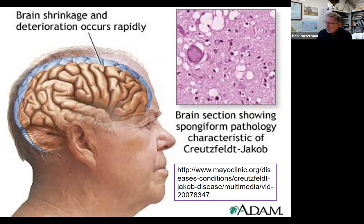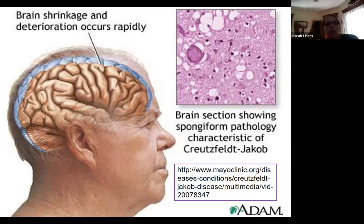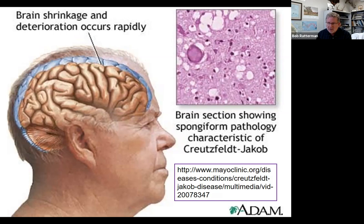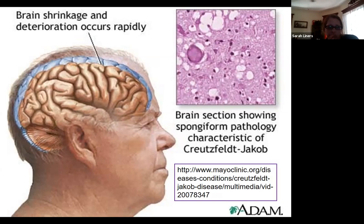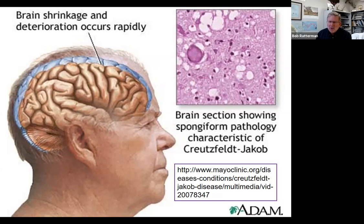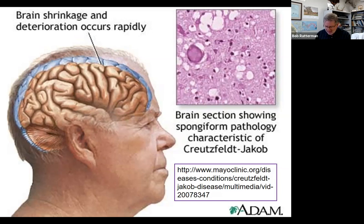You can also get Creutzfeldt-Jakob disease through ingestion of prions, such as from contaminated meat. Not many years ago, people in the United Kingdom died from eating contaminated beef containing prions. The prion got into the beef because cattle were fed meal containing ground-up nervous tissue from other cows — essentially cannibalism. Commercial enterprises used those fillers from the previous week's butchering, and it turned out to be a nasty way of transmitting the prion.